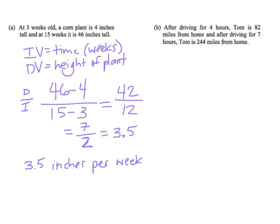Next one. After driving for 4 hours, Tom is 82 miles from home. And after driving for 7 more hours, Tom is 244 miles from home. Okay, again, let's determine independent and dependent variable here. So, first of all, we have our independent variable. So what determines the distance? Does the time determine the distance? Does the distance determine the time? Well, in this case, they're telling us he drives this much and goes this far. So the independent variable is the time, and the dependent variable is the distance. Okay, and the time was in hours, and the distance was in miles.